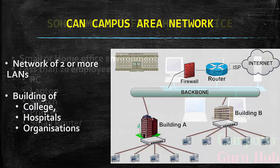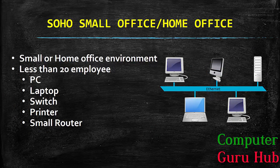Moving to the next part, we have SOHO — Small Office or Home Office. When I connect all components of my office together and I have a strength of less than 20 employees, then the network I make is known as a Small Office or Home Office network. The various components of SOHO can be a PC, laptop, switch, printer, and if I am using a small-scale router, that can be a wireless router or a router with 10 to 15 or 20 ports.